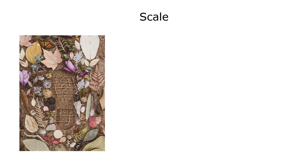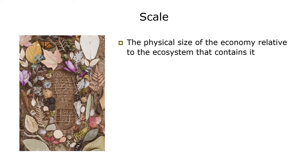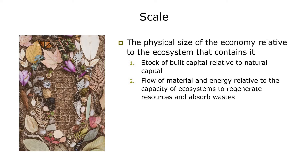Last up is scale. Scale is the physical size of the economy relative to the ecosystem that contains it. We can talk about scale in two different ways: first, in terms of stocks — the stock of built capital relative to the stock of natural capital. However, neither of these concepts are particularly easy to measure, which is why we usually talk about scale in terms of flows. In this sense, the scale of the economy is the flow of matter and energy going through the economy, relative to the capacity of ecosystems to regenerate resources and assimilate wastes. Environmental footprint indicators — such as the carbon footprint, material footprint, and ecological footprint — are good ways of measuring the scale of economic activity at the national level, while planetary boundaries provide a powerful set of measures at the global level.